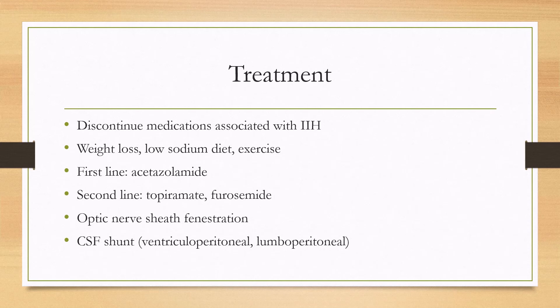In terms of treatment, you'll want to discontinue medications commonly associated with IIH. The mainstay of treatment is weight loss, a low sodium diet, and exercise. First-line medication treatment, which can be started at the time of diagnosis, includes acetazolamide or other carbonic anhydrase inhibitors. Second-line options include furosemide or topiramate. If vision is getting worse, patients may go on to have optic nerve sheath fenestration surgery or a CSF shunt surgery, such as a ventriculoperitoneal shunt or lumboperitoneal shunt.